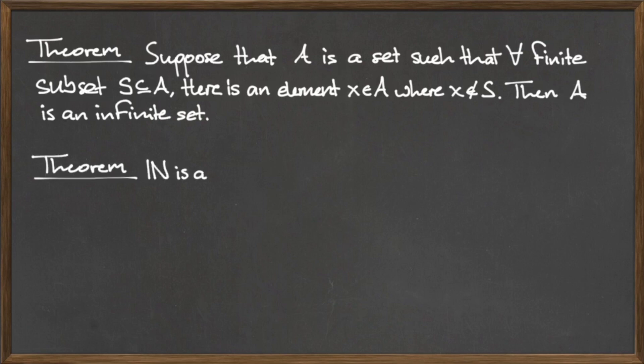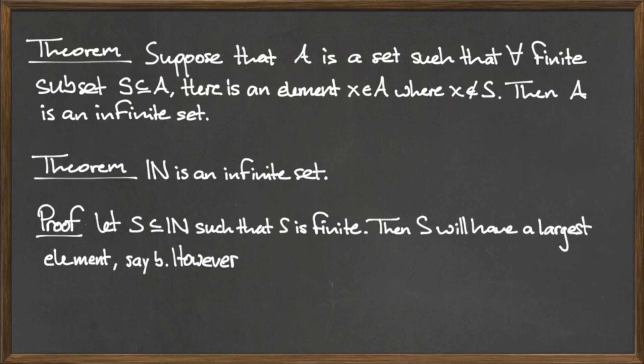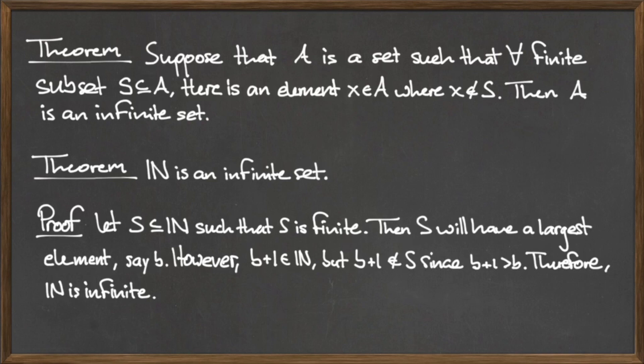The second theorem simply states that the natural numbers are an infinite set. To prove this theorem, let S be a finite subset of the natural numbers. Since S is a finite subset, then S must have a largest element. Call this element B. However, since B is a natural number,